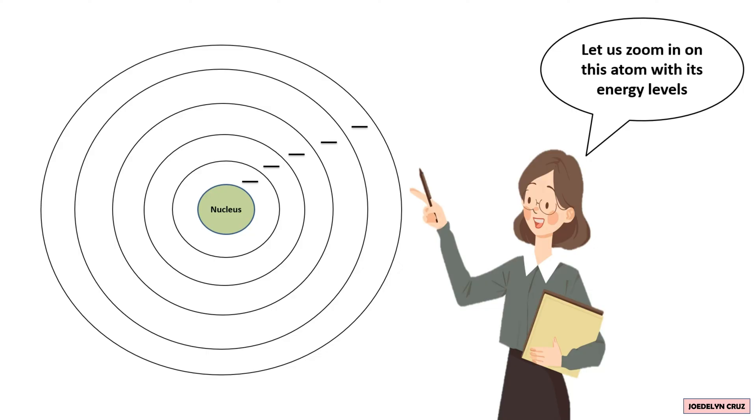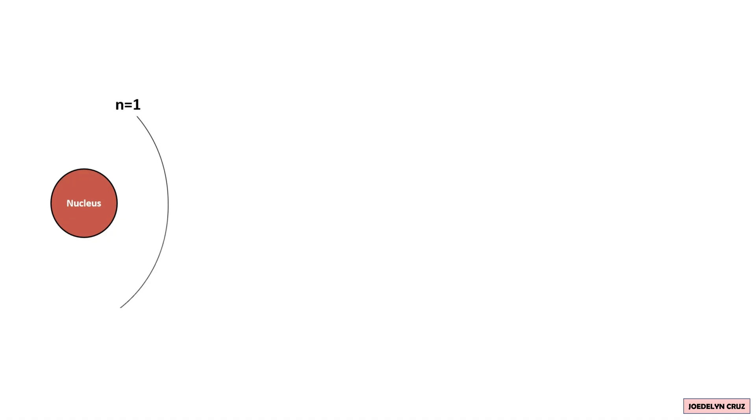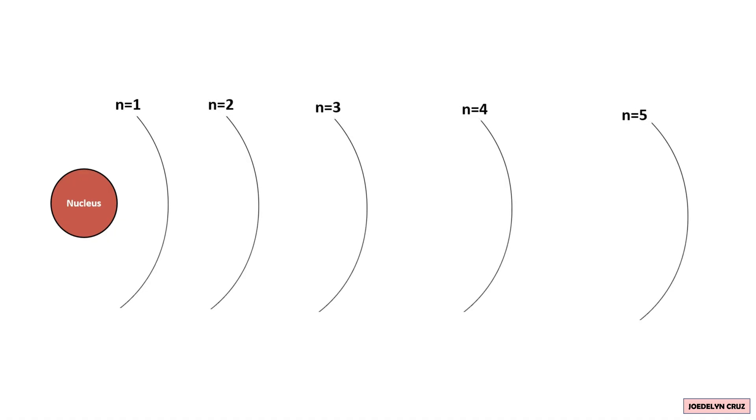To better understand the sublevels, let us zoom in on this atom with its energy levels. This is the nucleus, then the first, second, third, fourth, and fifth energy levels.